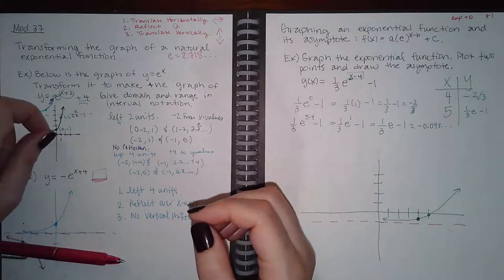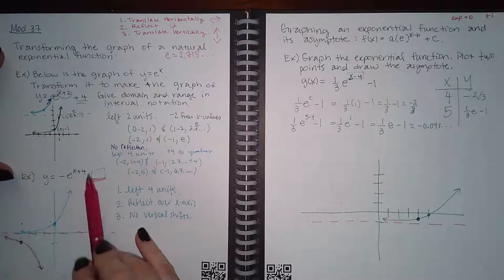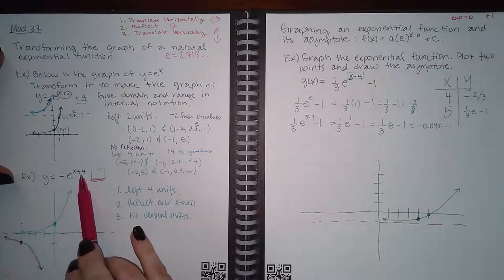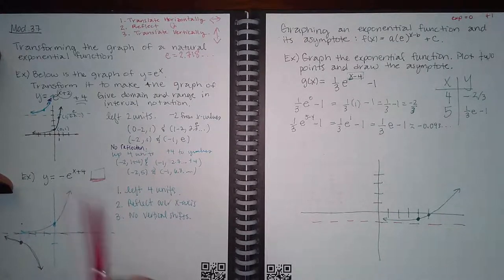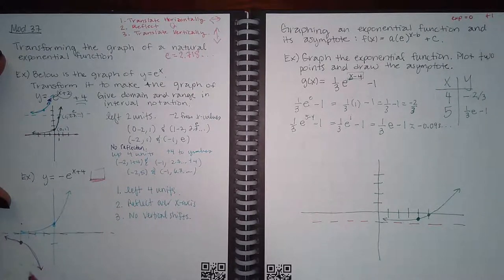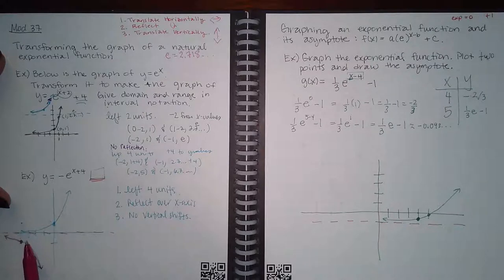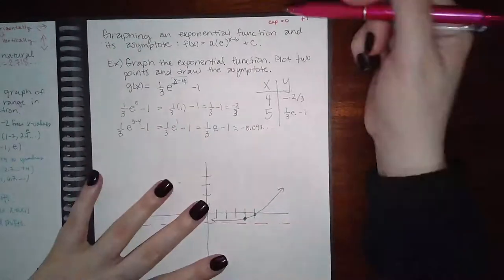In the next problem, there is a left shift of four units. There is a negative sign, so it will reflect over the x-axis, but there is no vertical shift, so the horizontal asymptote does not move. The key point shifts left four, then reflects over the x-axis — so instead of being at (-4, 1), it ends up at (-4, -1).